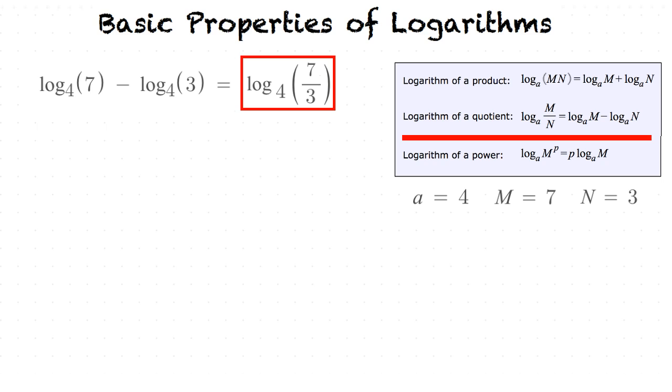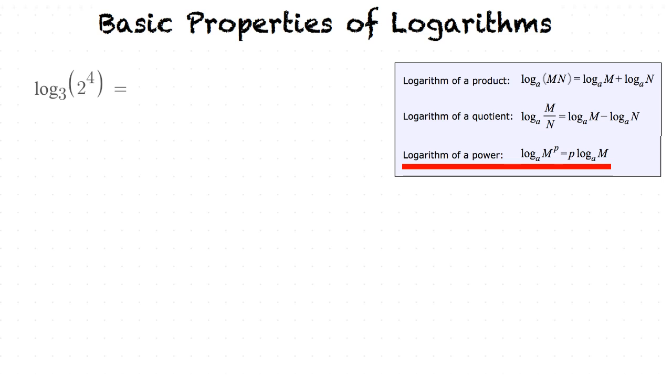Now let's do an example involving the power rule. So in this case, our base a is going to be equal to 3 and our m is going to be equal to 2, while our p, a real number, is going to be equal to 4. p is an exponent, 3 is a base.